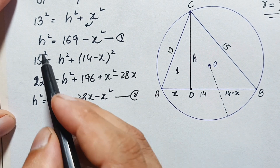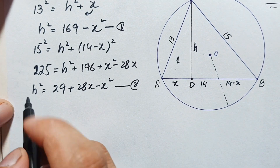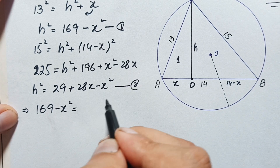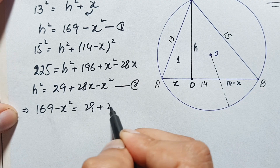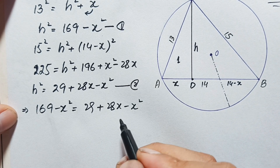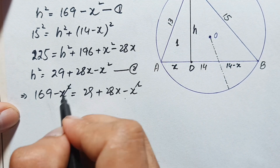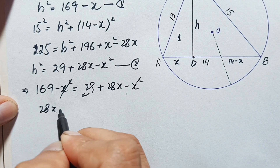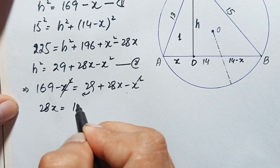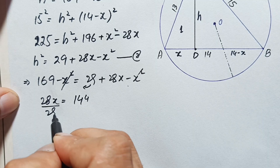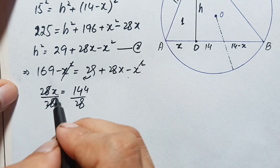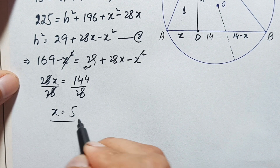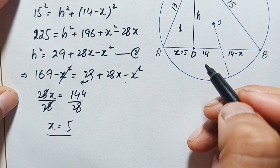Comparing Equation 1 and Equation 2, both have the same left-hand side h squared. So: 169 minus x squared equals 29 plus 28x minus x squared. The x squared terms cancel on both sides. Moving 29 to the left: 28x equals 169 minus 29, which is 144. Dividing both sides by 28, x equals 144 divided by 28, which gives x equals 5 units.